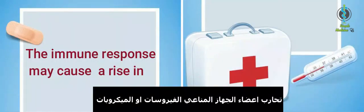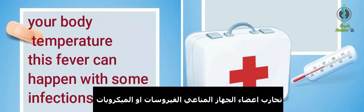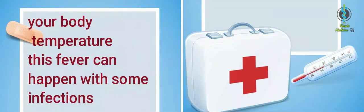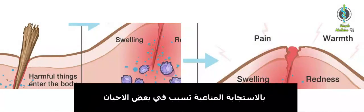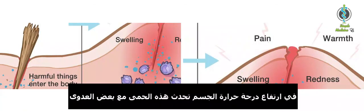The immune system organs fight microbes and viruses. The result of this process is called immune response. That sometimes causes a rise in your body temperature. This fever can happen with some infections and it kills some microbes.